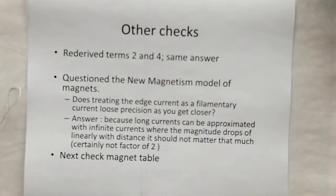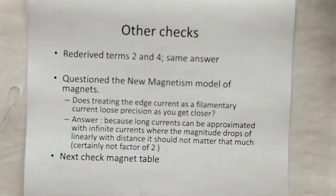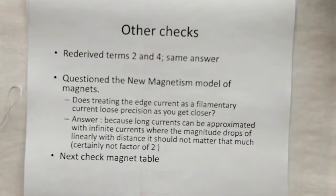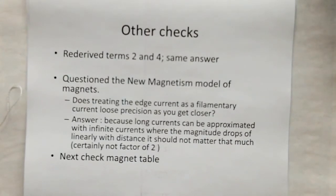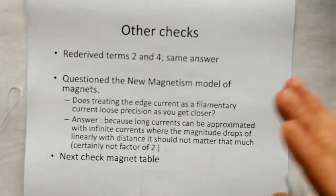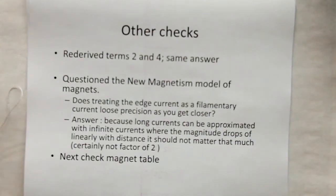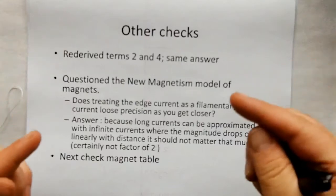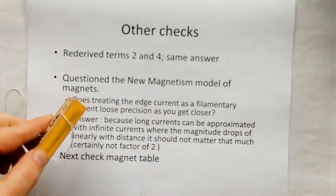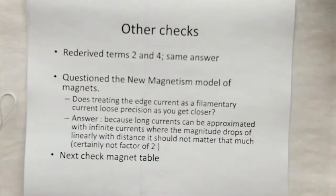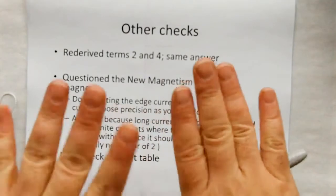I went and just double-checked that I derived the second and fourth term from classical theory, where I got the same answer. I questioned the new magnetism model of magnets. Does treating the edge current of a magnet, does that break down when you get to very close distances? We know from long distances away, it's a very good model. But maybe when you get very close, that loses resolution. So I did some experimenting in the software.